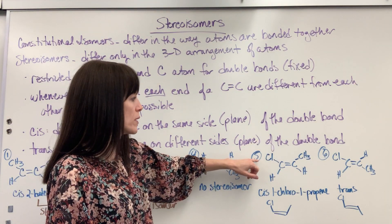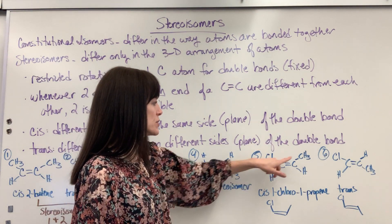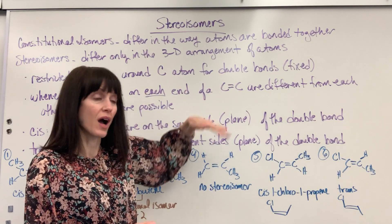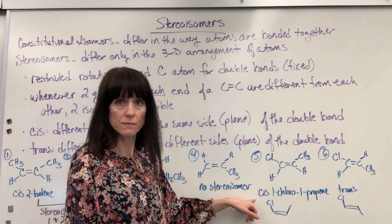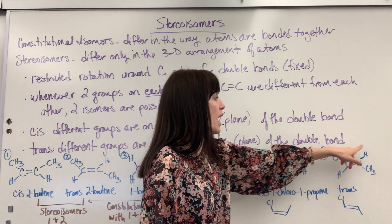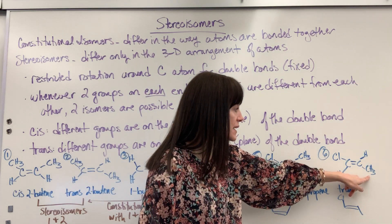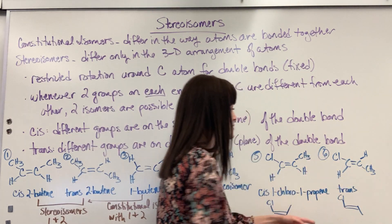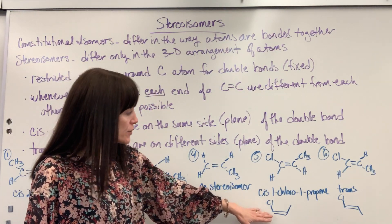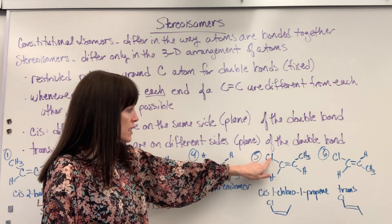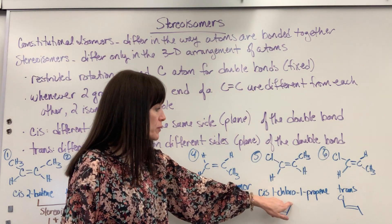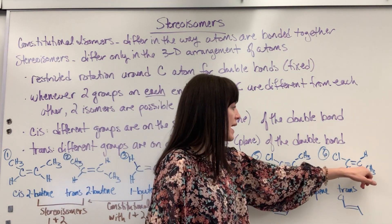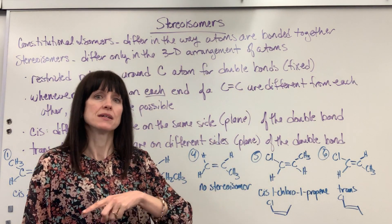Let's look at this 1-chloro-1-propene. I've got my chlorine, hydrogen, a methyl, and a hydrogen. Notice these two are on the same side — both on top when I'm looking at that double bond — so this would be cis. Over here I've got the chlorine and hydrogen, with the hydrogen up top and the methyl down below. Those two attachments go across that double bond, so it's going to be trans-1-chloro-1-propene. In the skeletal structure, you've got your chlorine on top with the double bond and the methyl group — a blank line means there's a carbon, so you'd have CH3. On the trans version, the chlorine is up top and that carbon is down below.